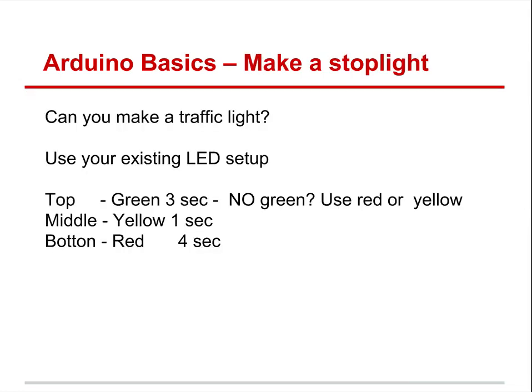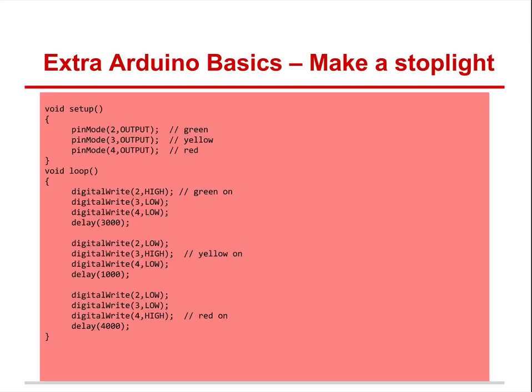One thing you can try: could you make a traffic light? That's good practice. Have the green light on for three seconds, middle yellow light on for one second, and bottom red light on for four seconds. When the red light's on, the other two lights have to be off. When yellow's on, green and red need to be off. When green's on, yellow and red are off. The code could look something like this — pause and try to build it. If you're just writing down the code after I've given it to you, you're not learning programming. Try to figure it out without just copying.